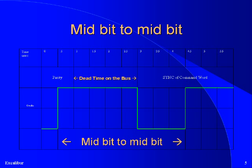In the above example, there is no difference in the signal of the second half of the parity bit and the beginning of the dead time on the bus, whereas the mid-bit of the parity and mid-bit of the sync are both vertical lines on the scope.